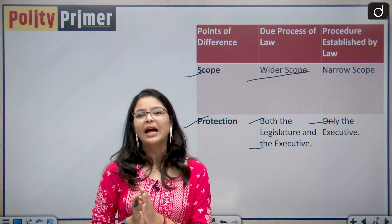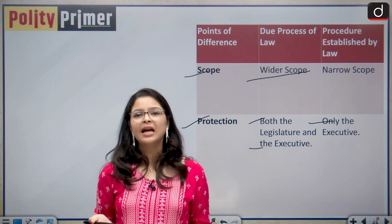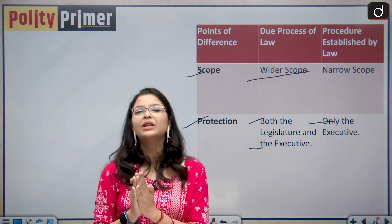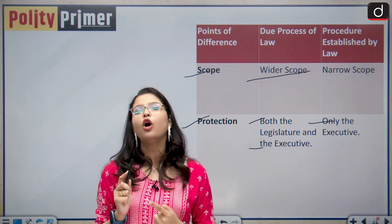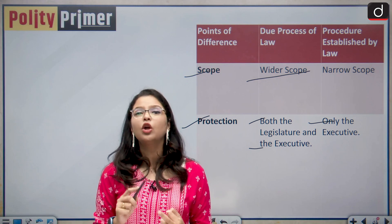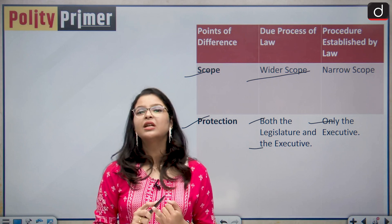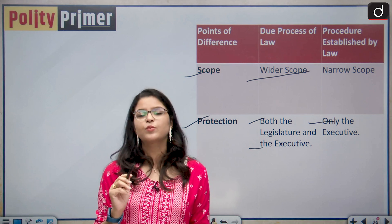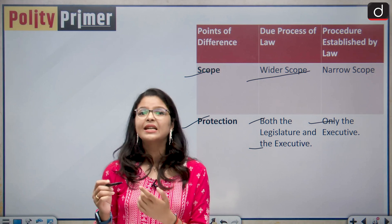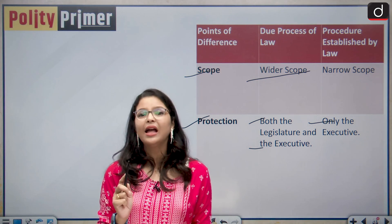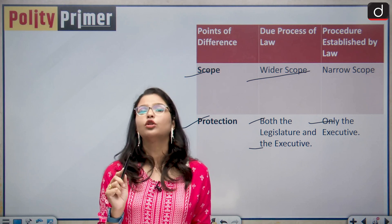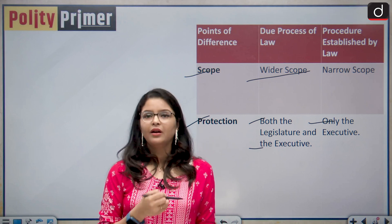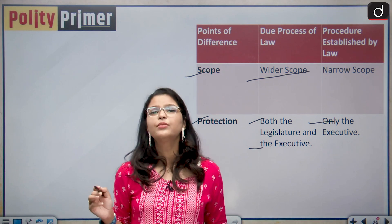For example, if the police comes to arrest someone, under procedure established by law the court will only see: which law was violated, whether it was a valid law at that time, and whether the police strictly followed the procedure. If all three conditions are met, the police is entitled to make the arrest. But under due process of law, the court will additionally examine whether Parliament's intention behind enacting that law was fair and just before deciding if there was a violation of Article 21.